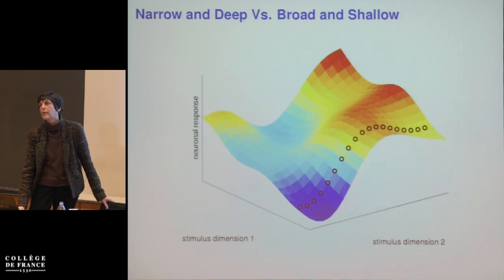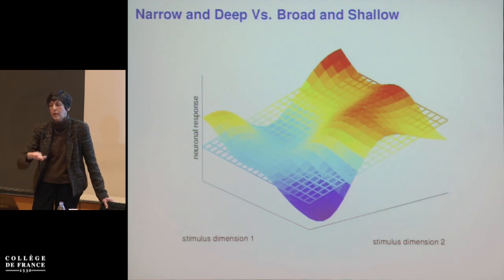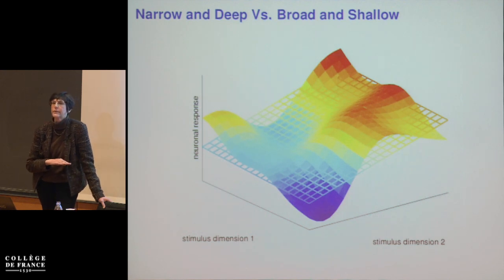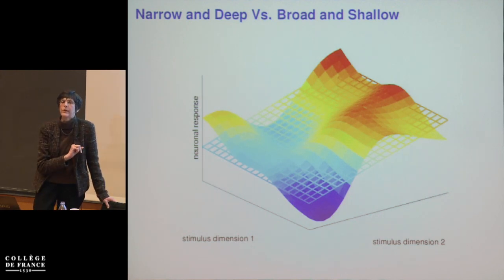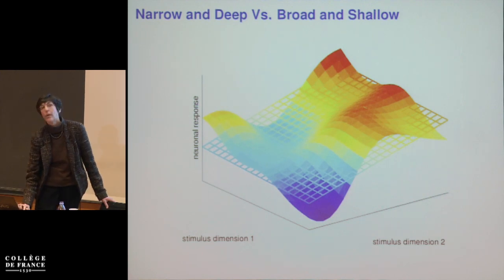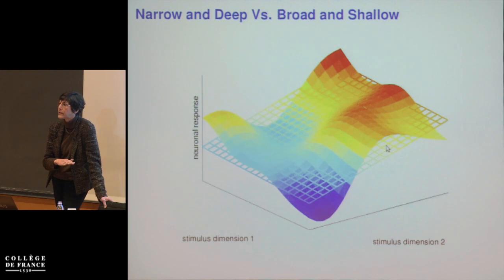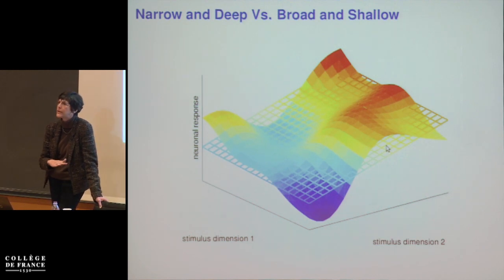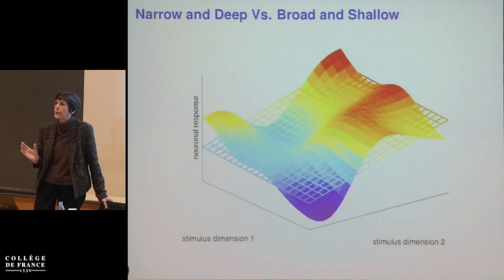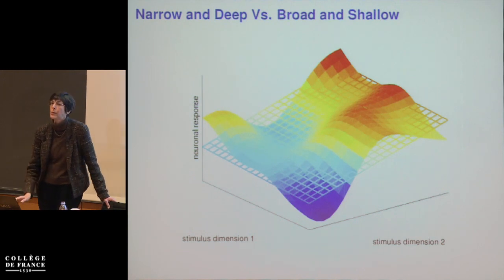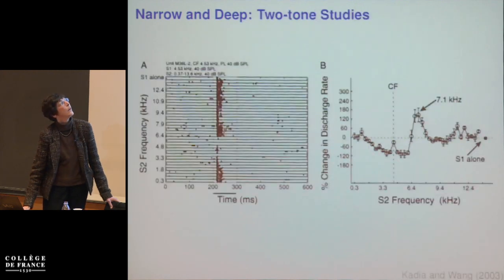The narrow and deep approach means constraining the stimulus space — for example, fixing the frequency of one of the two tones and just varying the other — limiting recording time. That gives you a very good picture of what's going on for the little slice you analyzed, but no idea what's going on with the rest of the response function. The broad and shallow approach essentially involves fitting a plane to this complex function — some low-dimensional approximation.